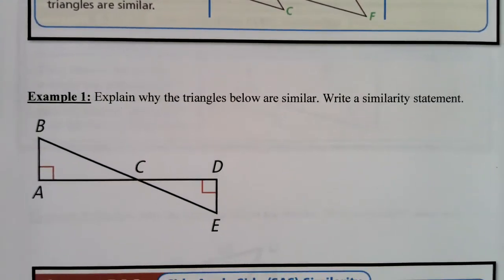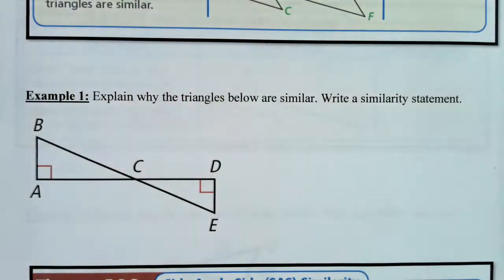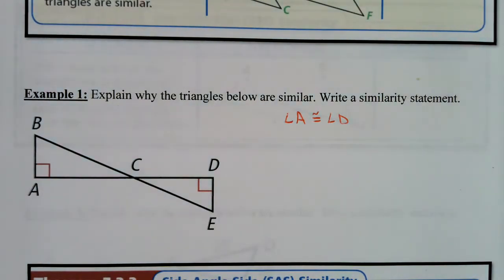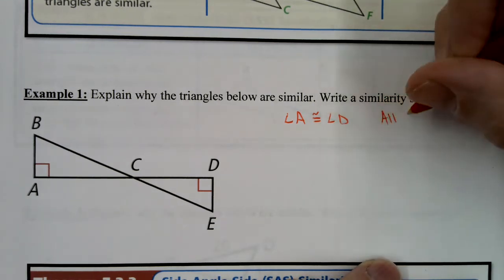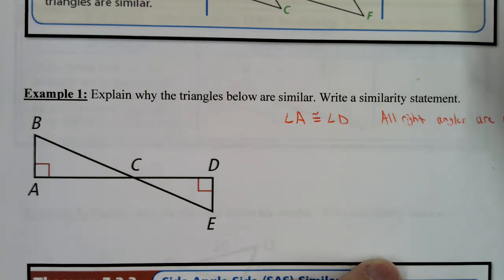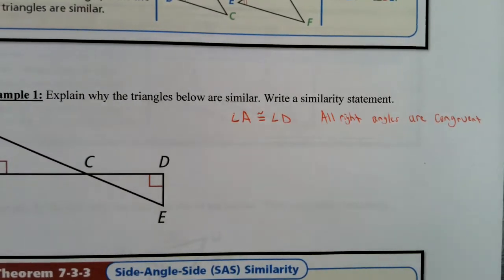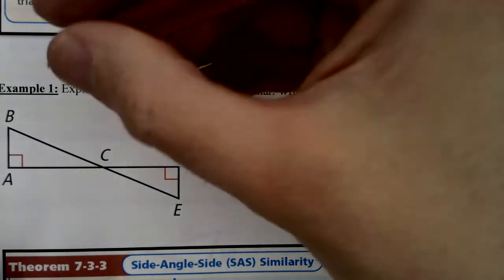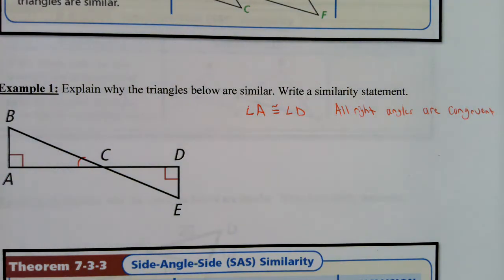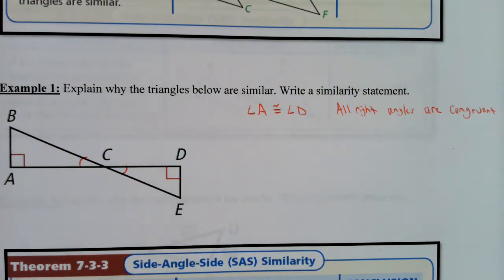Example one: explain why the triangles below are similar, and write a similarity statement. First of all, we know that angle A is congruent to angle D because all right angles are congruent. We also know that angle ACB is congruent to angle DCE because they are vertical angles, and the vertical angle theorem says that all vertical angles are congruent.